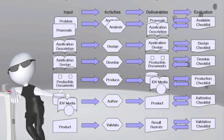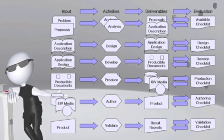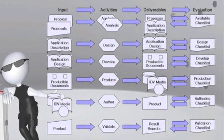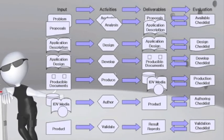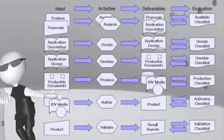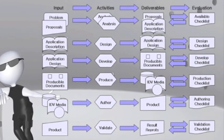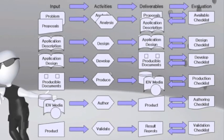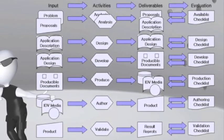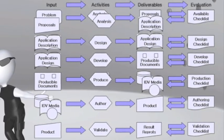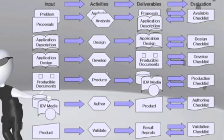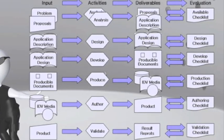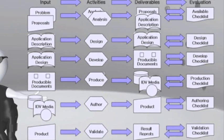Like all instructional design models, the Bergman & Moore is made up of a series of steps. This model requires its users to produce and manage an enormous paper trail indicative of video production. Each of the six major steps begins by analyzing the documents produced by the previous step and ends with the production of new documents. The Bergman & Moore Instructional Design Model helps production managers generate a global view of the project and manage it to a successful conclusion.